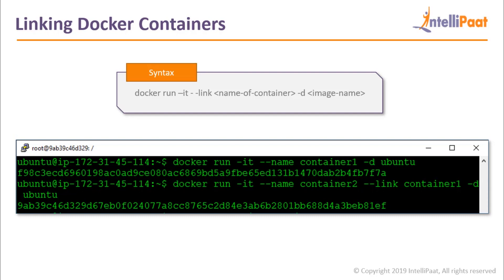The syntax is: docker run -it, then --link followed by the name of the container you want to link with, then -d and the image name. The most important thing for linking two containers is the name of the container. As you can see in this command, I'm running a container — say container one — and naming it using --name. That is how you define the name of a container, and --name is very important.